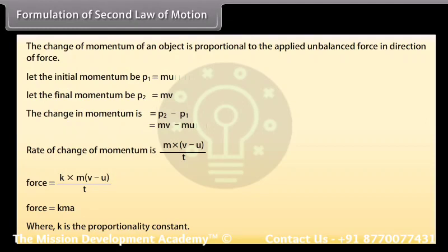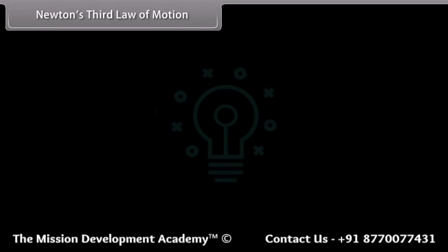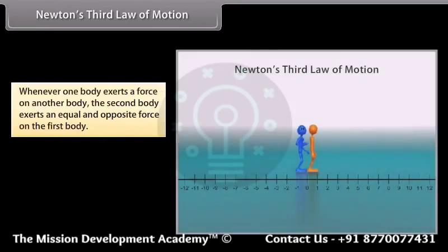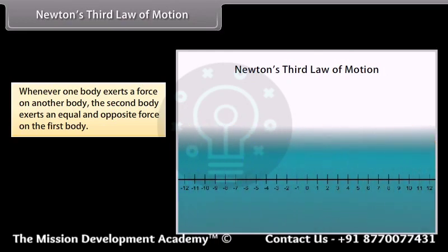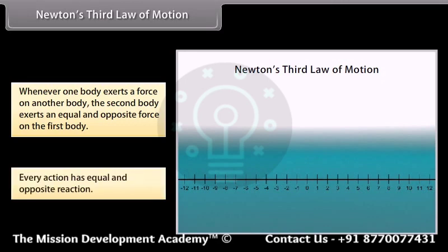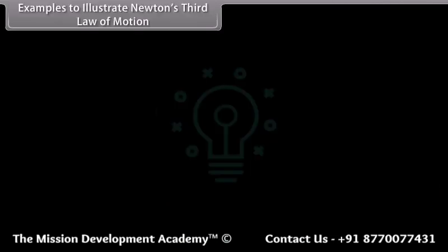Newton's third law of motion: whenever one body exerts a force on another body, the second body exerts an equal and opposite force on the first body. Every action has an equal and opposite reaction. Examples to illustrate Newton's third law of motion.